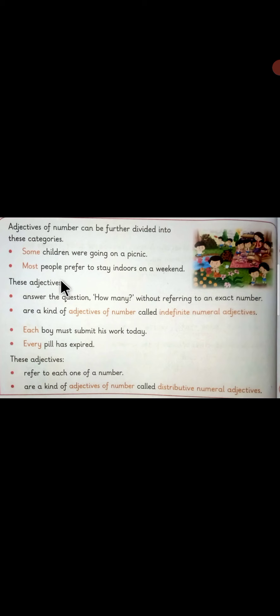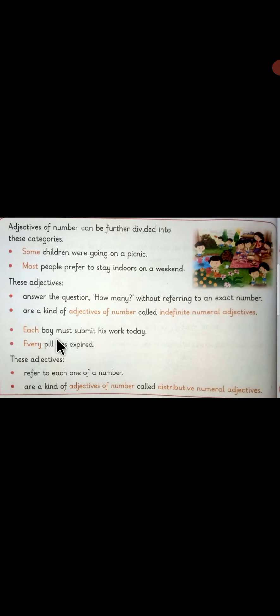Now let's take another one: 'Each boy must submit his work today.' And in the next example: 'Every pill has expired.' The words 'each' and 'every' are adjectives and they refer to each one of a number. These are a kind of adjectives of number, and are called distributive numeral adjectives, simply because it is being referred to each person, each boy, each pill, every pill. We are telling something that is distributive — we have distributed for different things or different people.